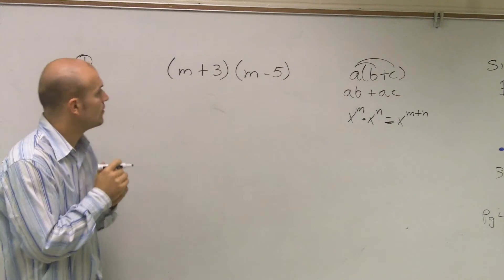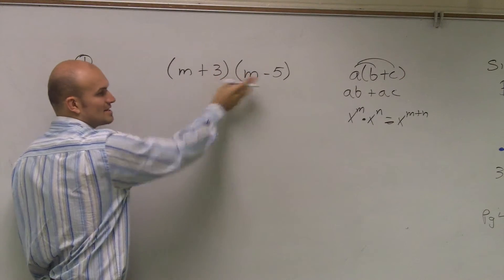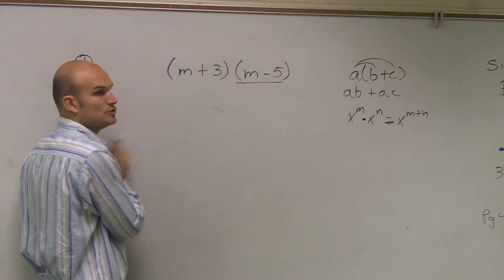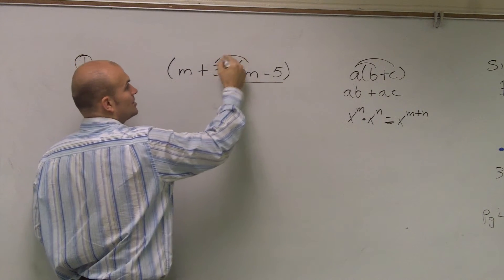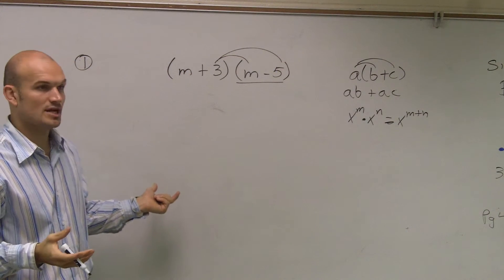So what I'm going to do, if you notice, I kind of have two numbers that are outside one of these parentheses. Here's our parentheses, I have two numbers outside of there. So what I'm going to do is I have to multiply, just like my distributive property rule, times both of those numbers.